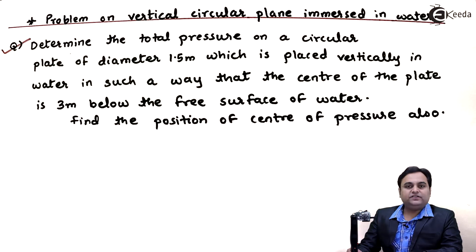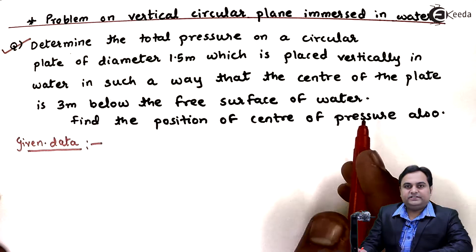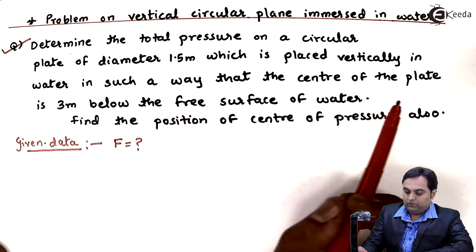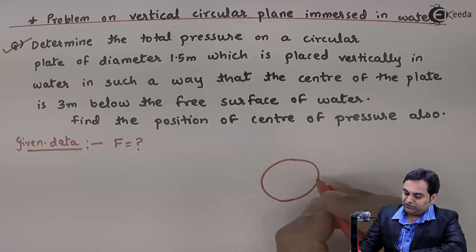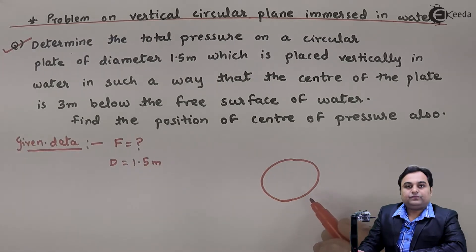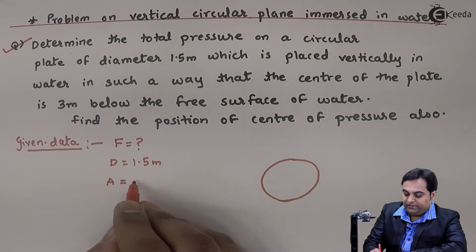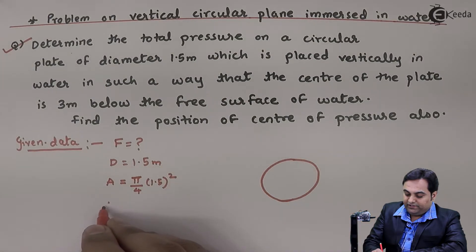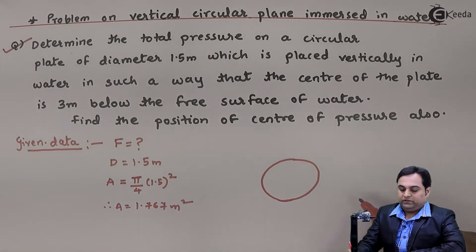Let us write down the given data. Total pressure will be denoted by capital F. The circular plate has diameter D equal to 1.5 meter. From this, we can calculate the area: area equals pi by 4 times D squared, and with D equal to 1.5, the area comes out to 1.767 meter square.